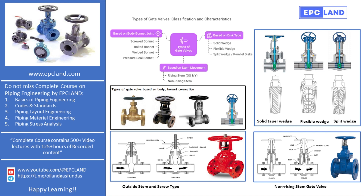The flexible wedge is also a one-piece disc but has a groove or cut around its edge. The cut allows the disc to flex slightly, which helps the valve seat better and improves tightness. Flexible wedges are especially useful in steam systems. When steam causes the pipeline to expand due to heat, the flexible wedge adjusts itself, preventing thermal binding. However, one downside is that fluids can collect in the groove, which may lead to corrosion over time.